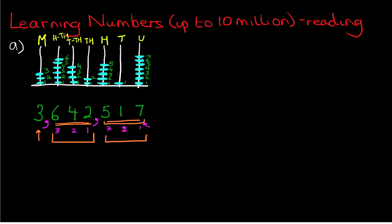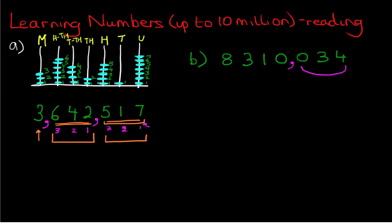We're now going to move on to our second example. This time I'm going to write the number down, and we're going to work out what it says. The first thing is to put the commas in. We're going to count three digits from the right and put a comma in. Then we count three more digits and put another comma in. So we've got two commas, which means we're immediately into the millions.